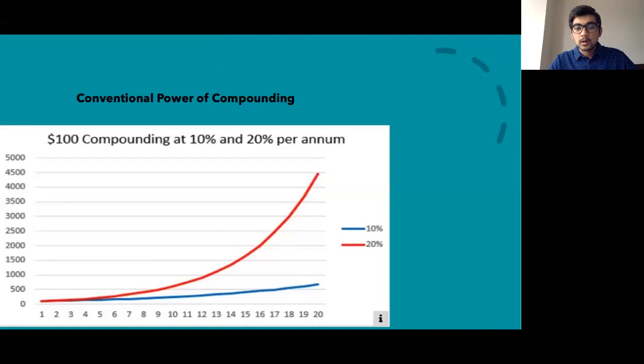So if you look up articles online, or if you look at other YouTube videos, they'll basically tell you the power of compounding is such that you get exponential returns in the long run. Now we obviously know this. In this graph, basically if I put a hundred dollars or a hundred rupees, and I compounded at 10% or 20%, you can see that